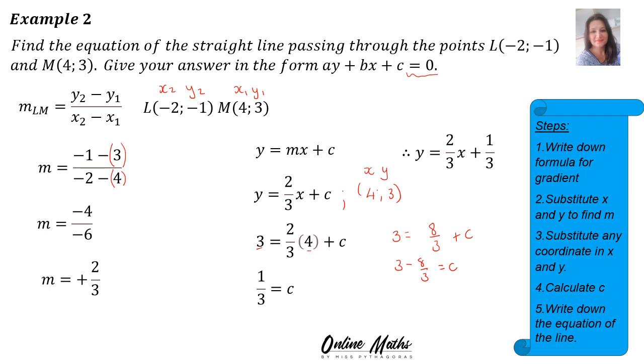But remember, they wanted it in this other form where everything on one side equals zero. So now we're going to multiply every single term by 3 so that the 3s can cancel out. And then I'm left with 3y is equal to 2x plus 1. And they will all walk across and it becomes 3y minus 2x minus 1 is equal to zero.